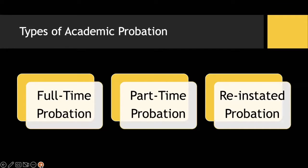There are three types of academic probation: full-time probation, which will allow you to take up to 13 credits; part-time probation, which will allow you to take only seven credits; and reinstated probation, which also will allow you to take up to seven credits.